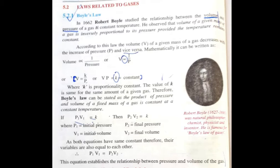Inverse relation means that one quantity is increased and the other quantity is decreased. So this is called an inverse relation. So we have studied according to this law, volume of a given mass of gas decreases when there is an increase of pressure, and volume of a given mass of gas increases when the pressure of a gas decreases.